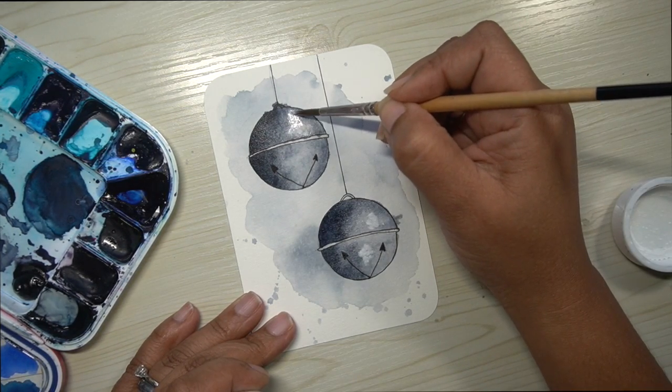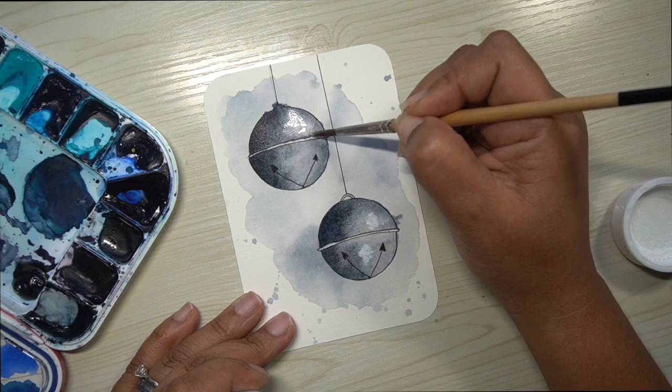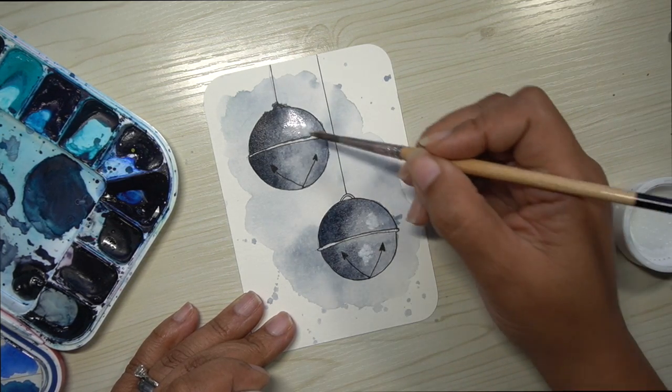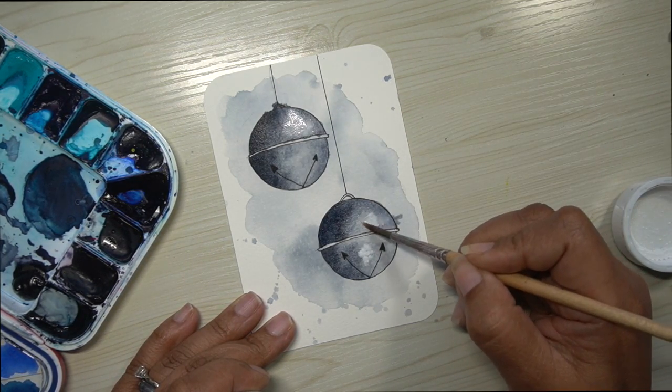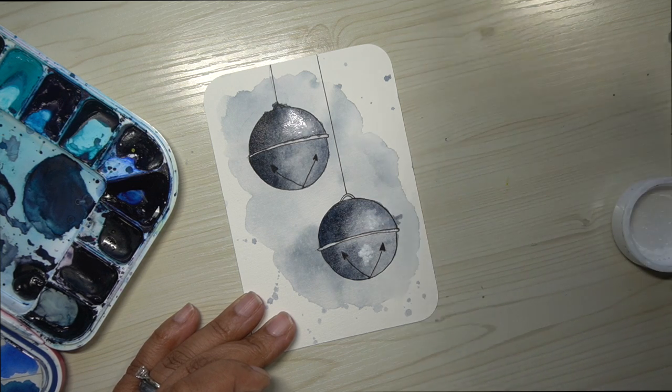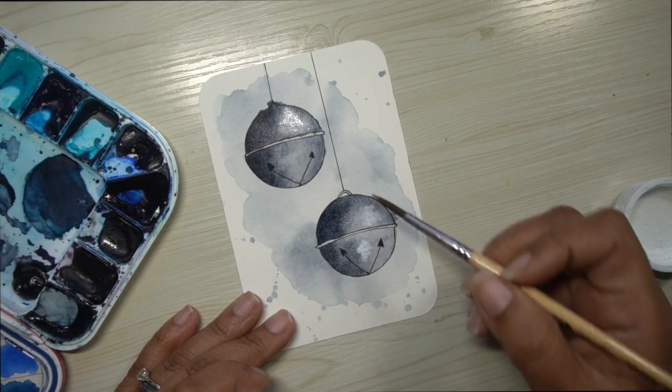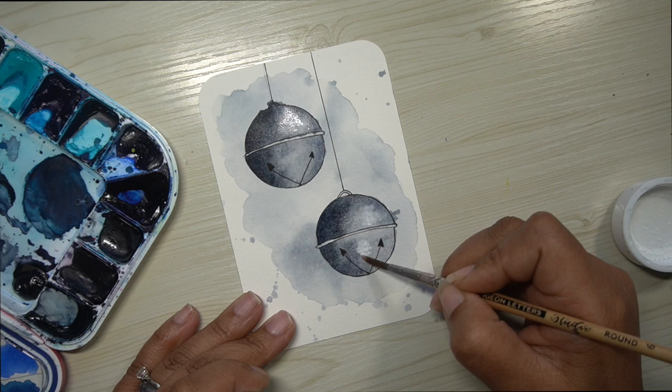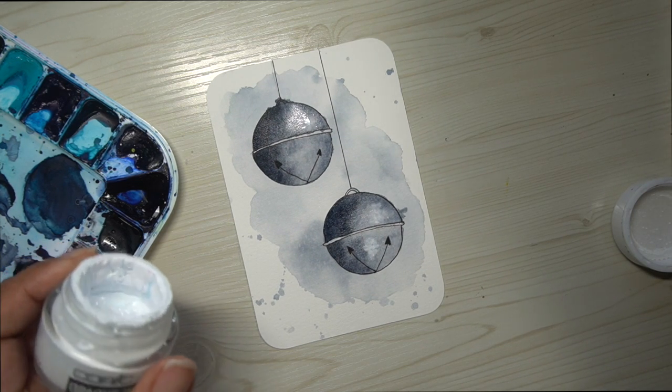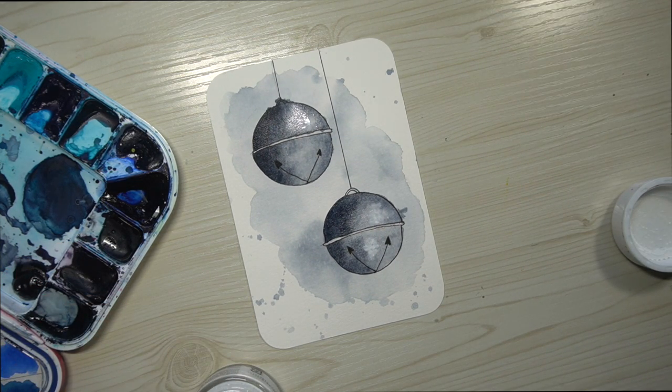If you find that your Payne's gray got a little away from you, this helps bring some of that white back in there. If you have enough white, then you don't need to do this step. Make sure that your bells are completely dry before moving on to the next step.